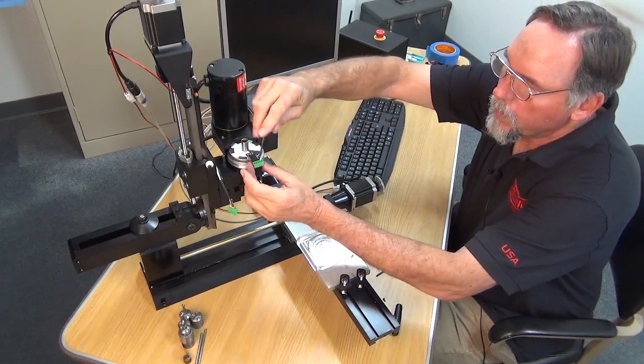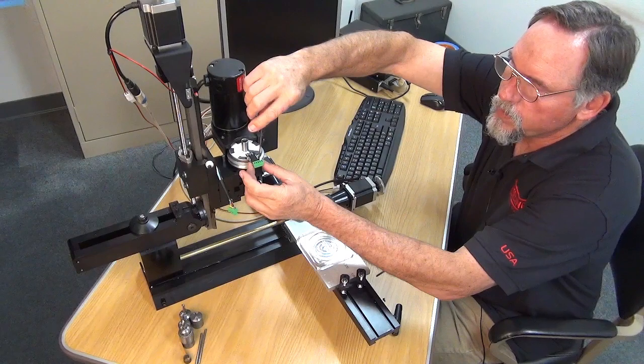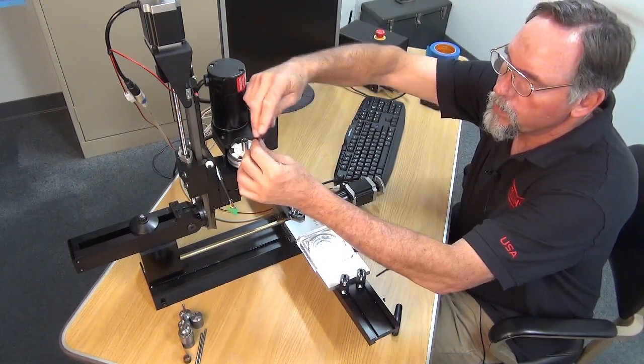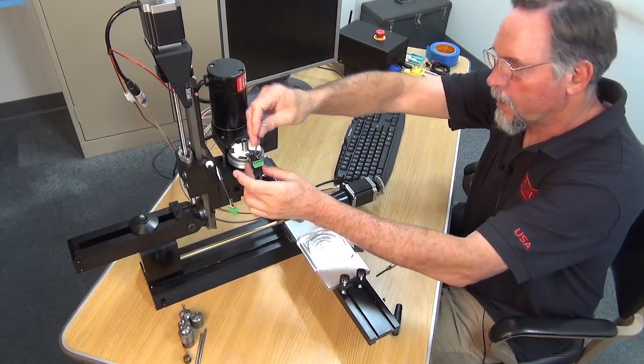Then you're just going to secure these just finger tight, both of these screws, to secure the optical encoder to the optical encoder bracket.